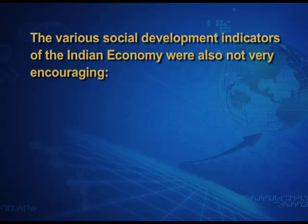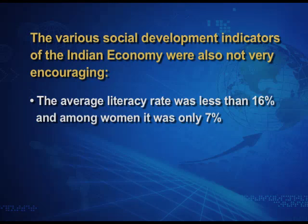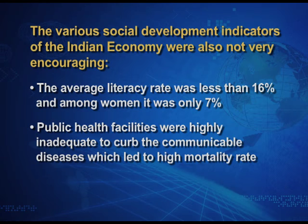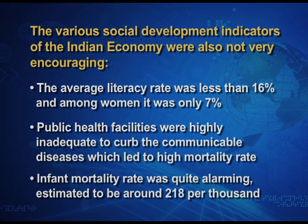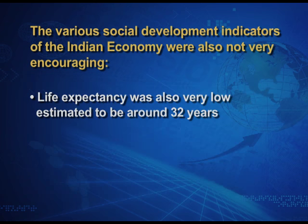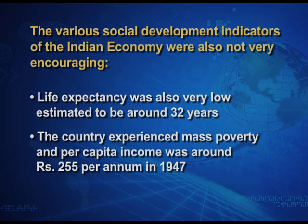The various social development indicators of the Indian economy were also not very encouraging. The average literacy rate was less than 16%, and among women it was only 7%. Public healthcare facilities were highly inadequate to curb communicable diseases, which led to a high mortality rate. The infant mortality rate was quite alarming, estimated at around 218 per 1000. Life expectancy was also very low, estimated at around only 32 years. The country experienced mass poverty and per capita income was around ₹255 per annum in the year 1947.